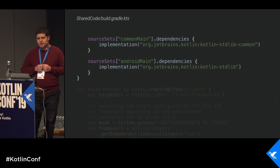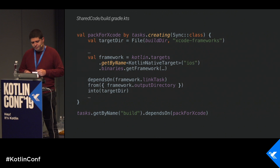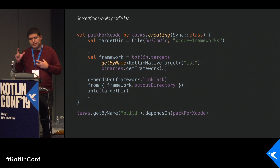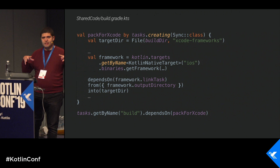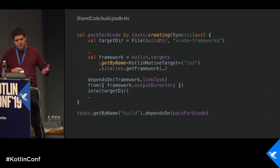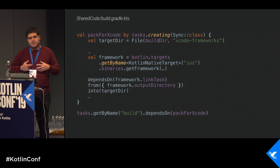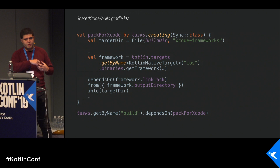Then we configure the source sets — the common source set, Android source set, and an iOS source set — each pointing to their respective Kotlin standard lib implementations. Because iOS and Gradle don't normally interact, to get interoperability in your build lifecycle you create a task that executes as part of the Xcode build pipeline, copying the Gradle build output into a place where Xcode can consume and link it. At that point, you'll need to build your app to generate the dynamic framework on your file system.